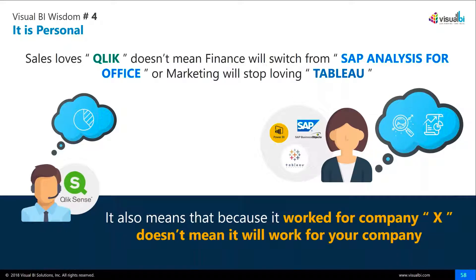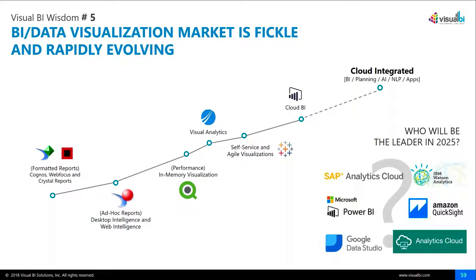The fourth wisdom is extremely important. What we find in most enterprises: go to Sales — they love Qlik. Go to Finance — they are heavy Excel users who love Analysis for Office and won't switch to Qlik. Go to Marketing — they are not going to switch from Tableau that they have been using. It's extremely personal. The key message is: just because something worked for Company X does not mean it will work for your company. You can look at a case study, but it's extremely personal at a company level and at a department level. Now I want to take you all through a little bit of history in the BI and visualization market.